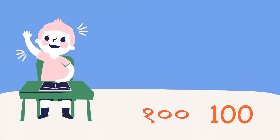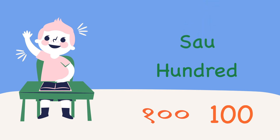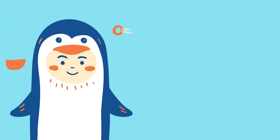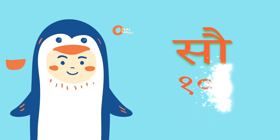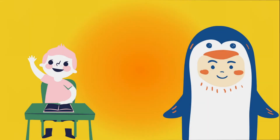And here's our final number: hundred! Hundred in Hindi is 'sau'. Such a big number but a small name — sau! That's one zero zero — ek sau — sau. That was amazing, friends! Thanks for watching, don't forget to like.